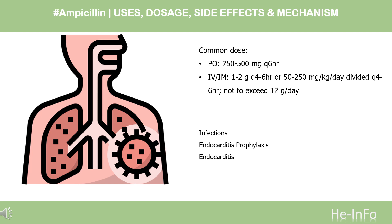Bacterial meningitis/septicemia: 150–200 mg/kg/day IV divided Q6–8HR; initiate with IV infusion, may continue with IM injections if preferred. Range: 6–12 g/day. Group B streptococcus prophylaxis (off-label) maternal dose: 2 g IV initially, followed by 1 g Q4HR until delivery. Listeria infection (off-label): 2 g IV Q4HR.